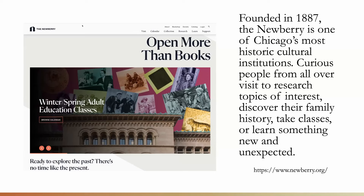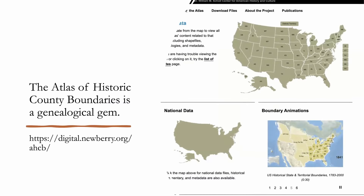The Atlas is basically a United States atlas — it covers all 50 states. You can get to it from digital.newberry.org/AHCB, Atlas of Historic County Boundaries. But I just type in 'Atlas of Historical' and it usually comes up first. It's a huge resource that describes in excruciating detail the boundaries, boundary changes, and history of every single county in the United States from its inception until the most recent changes.